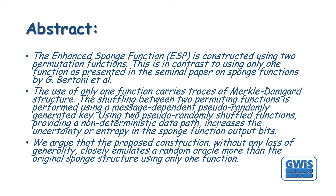The Enhanced Sponge Function ESP is constructed using two permutation functions. This is in contrast to using only one function, as presented in the seminal paper on sponge functions by Bertoni et al. The use of only one function carries traces of Merkle-Damgard structure. The shuffling between two permuting functions is performed using a message-dependent pseudo-randomly generated key. Using two pseudo-randomly shuffled functions, providing a non-deterministic data path, increases the uncertainty or entropy in the sponge function output bits.